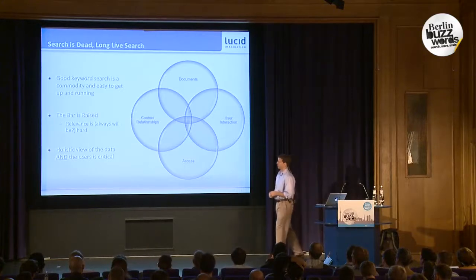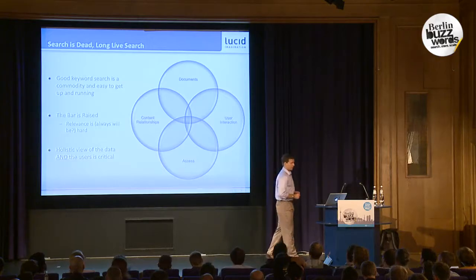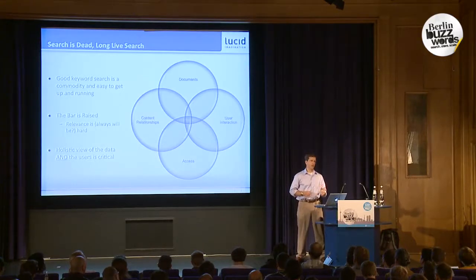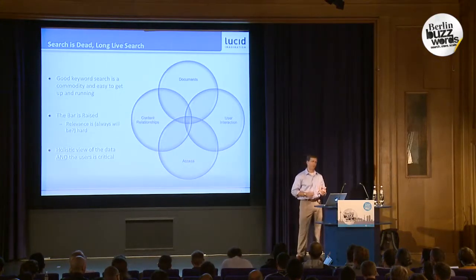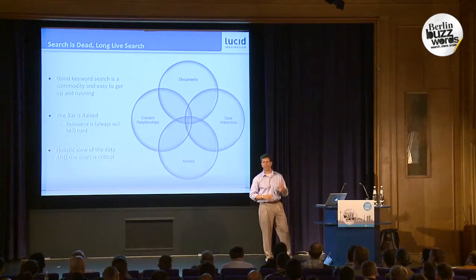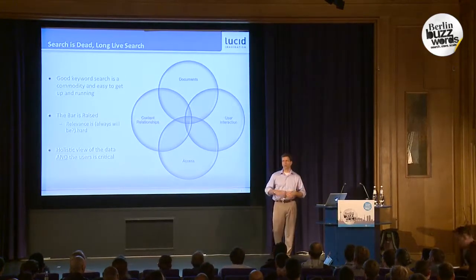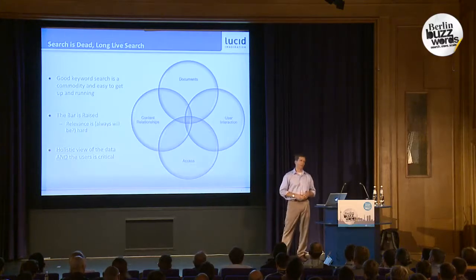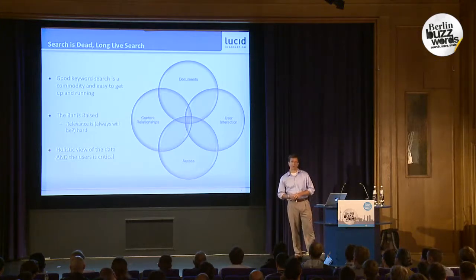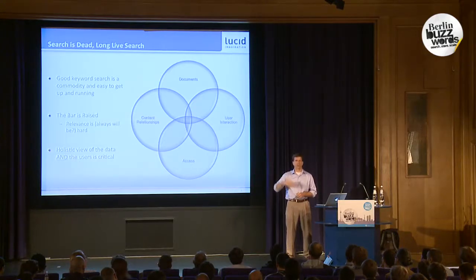With Lucene, Solr, Elasticsearch, or whatever it is, you can get really good keyword-based search out of the box — phrases, wildcards, all of that. But you're starting to see the bar raised, no thanks to Google and the like. When we first started Lucid four years ago, most questions were around how do I get Solr stood up, how do I make it scale. Now most questions are: how do I get better results, how do I translate my domain knowledge into more effective queries and better products?